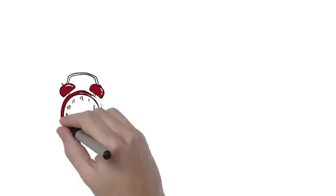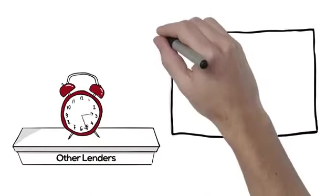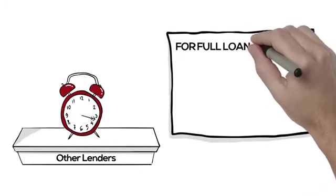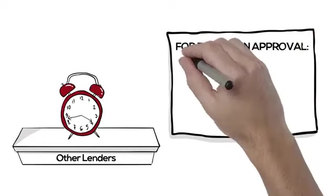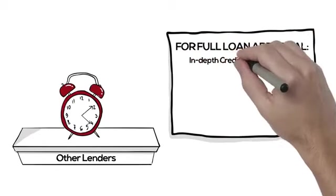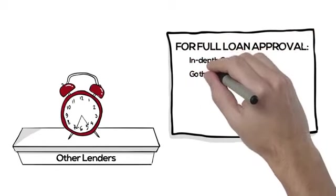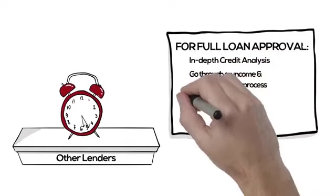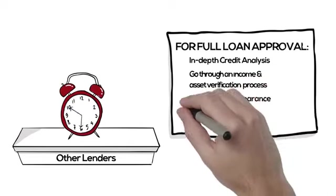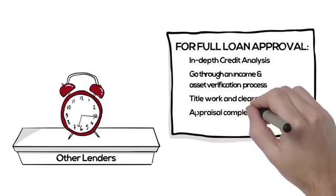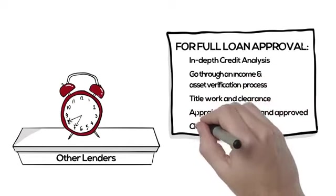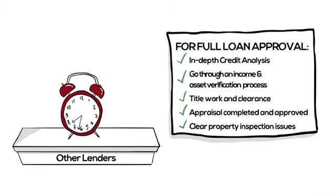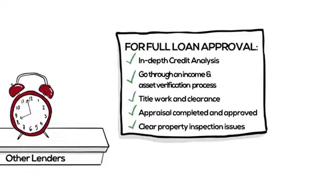Here's why. In a typical purchase, the clock starts after a buyer has an accepted offer and escrow is opened. To name a few items, the lender must have in-depth credit analysis, not only look at FICO score, go through an income and asset verification process, title work and clearance, appraisal completed and approved, clear property inspection issues. All of this before final approval to fund, assuming no other issues pop up.